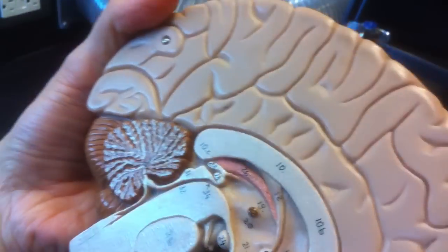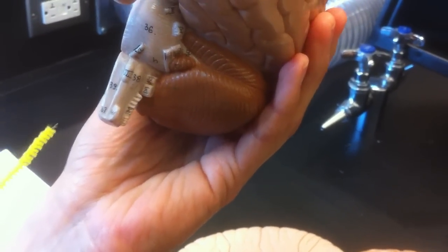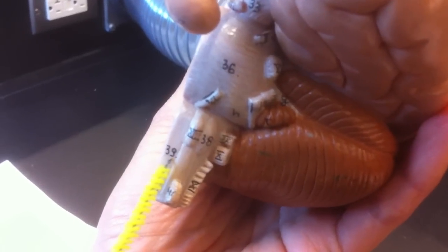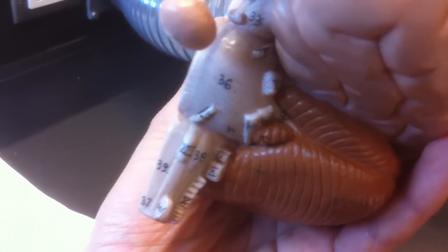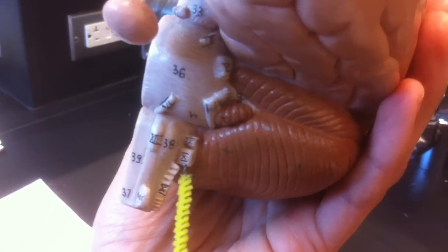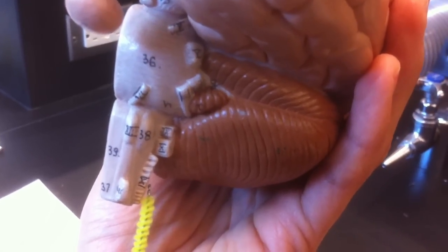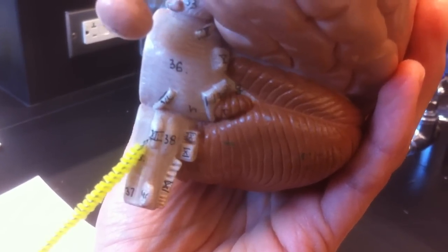Moving on to the medulla oblongata, which is the myelencephalon. Starting with the decussation of pyramids. I believe it's thirty-nine. It is. Thirty-nine is the pyramid. Cranial nerve nine, glossopharyngeal nerve, right here on the side. Cranial nerve ten, the vagus nerve. Cranial nerve eleven, the accessory nerve, meaning it's this. Cranial nerve twelve, the hypoglossal nerve. That's it. And that is our brain.